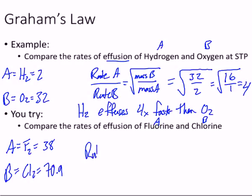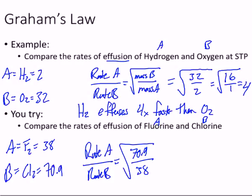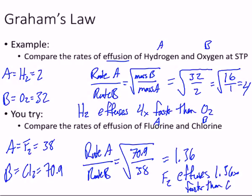Chlorine is going to be about 70.9-ish. Alright? So when we go ahead and do this, it's going to be the rate of A over the rate of B equals the mass of B. So 70.9 over 38. This one is not so much mental math. Make sure you do the division first and then the square root. What do you get for an answer? 1.36. Yeah. So 1.36. Now again, we're going to write a little statement. So we're going to say that F2 effuses 1.36 times faster than Cl2.